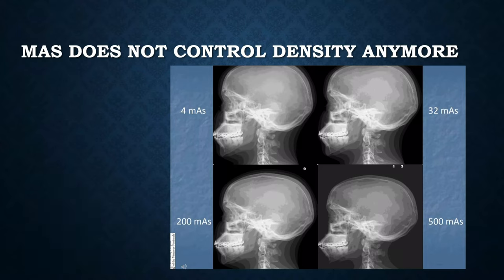Brightness is controlled by processing algorithms, look-up tables, and rescaling. This is difficult for old school techs to realize sometimes. Look at the images created here with 4 mAs, 32 mAs, 200 mAs, and 500 mAs. Due to the processing, there's not very much noticeable difference between 4 mAs and 500 mAs. This would be a major difference using film screen.